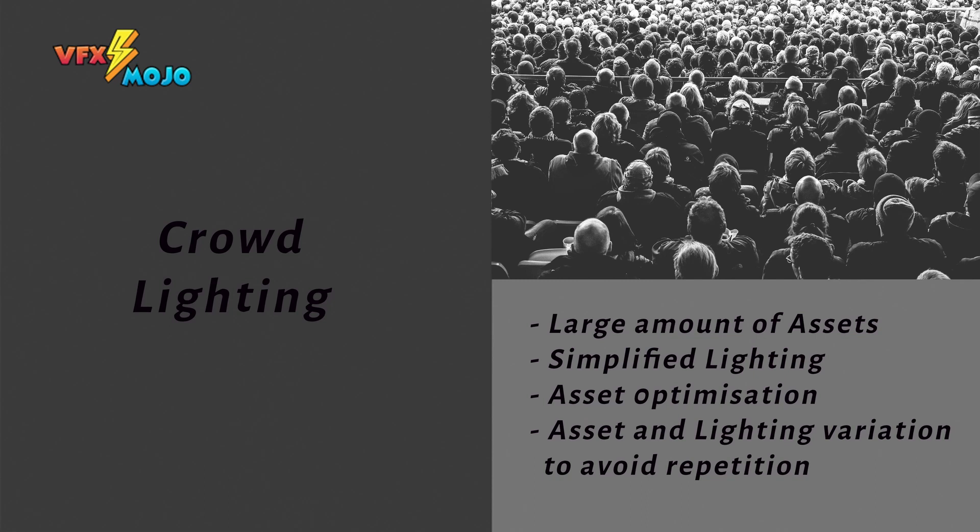Similar to environments, your lighting cannot be too complicated. Often I use nothing more than an HDRI and a key light. Working with gobos to break up the light, to simulate clouds or just to create variation, will be most of the time the main work. Crowds means lots of the same or similar characters, and part of the lighter's job can be to find ways to randomize the colors in the shaders per character a bit, to avoid the crowd render looking repetitive.